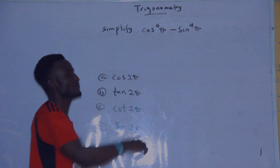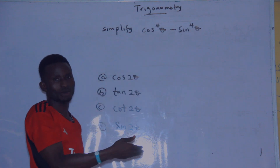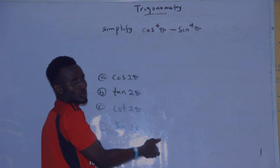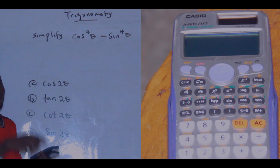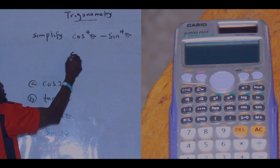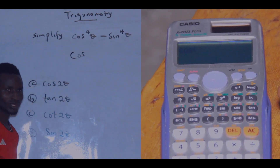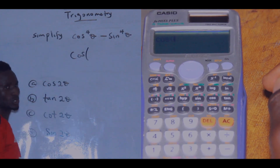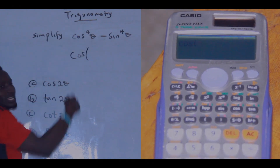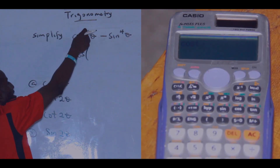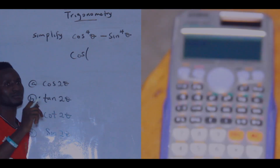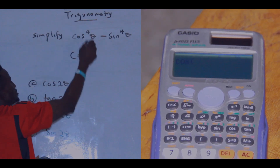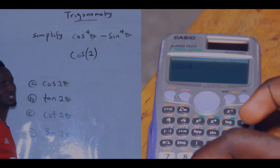The question says simplify this expression and these are the options. When you have the question with options, you observe them carefully. Press cos on your calculator — it will open the bracket — and you substitute a value for theta. The same value you substitute for theta is what you'll substitute into the options. Just remember the value you used. Let's use two for theta.